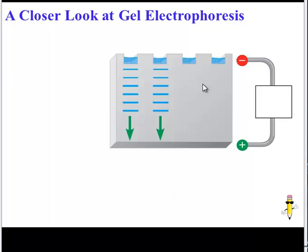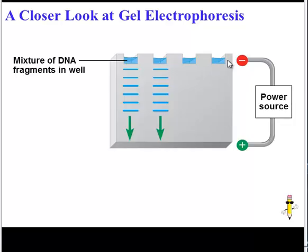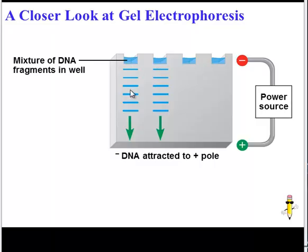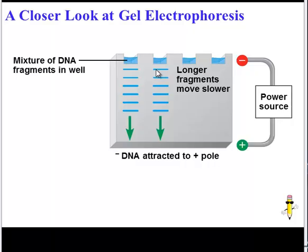So let's take a closer look at how gel electrophoresis works. Here's our gel. At one end of the gel are wells, and wells are where the DNA fragments are placed or loaded. The gel is connected to a power source, and the power source will run electricity through the gel. Now, because DNA is always negatively charged, once electricity runs through the gel, the negative electrical current is going to push the negative DNA to the positive pole. Longer fragments are going to be pushed more slowly, so the closer to the well, the longer the fragment. The further from the well, the shorter the fragment.